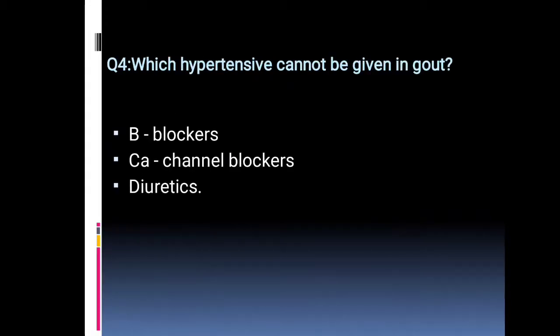Which antihypertensive cannot be given in gout: beta blocker, calcium channel blocker, or diuretic? You should revise the mechanism of action of each of these drug classifications.